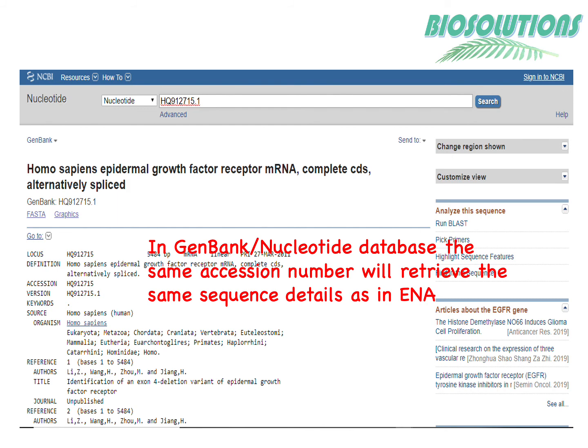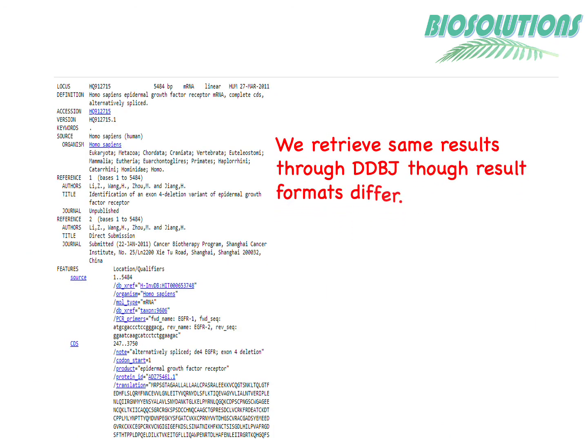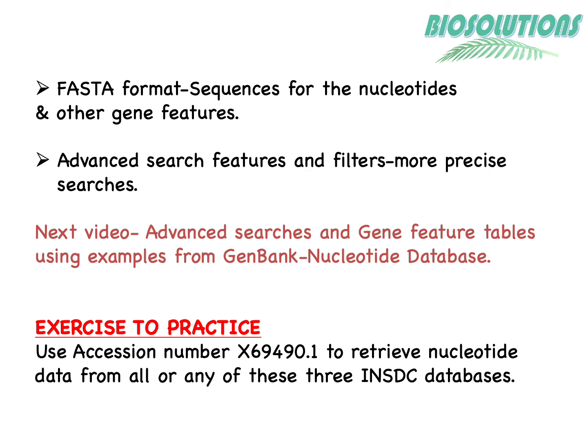Similarly, in GenBank the same accession number retrieves the same sequence details as we saw in ENA, and the same results can be found in DDBJ. Each of these databases offers sequences for the nucleotides as well as other gene features. Advanced search features and filters are also included to make searches more precise.